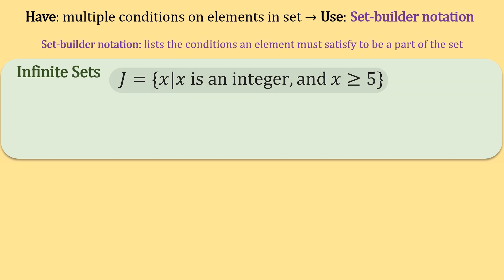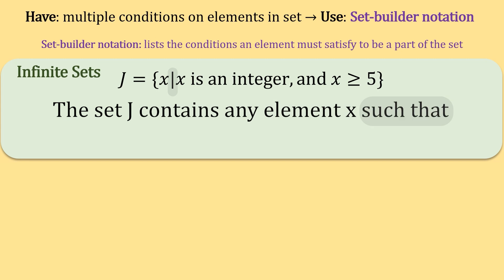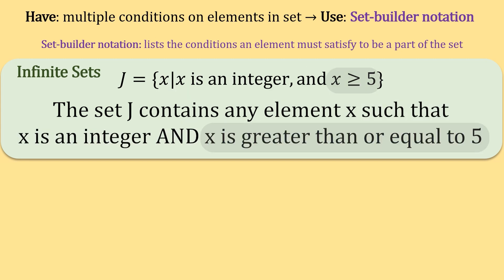Knowing this, I can now read this as the set J contains any element x such that x is an integer and x is greater than or equal to 5. Everything that follows this vertical line are the conditions that define the elements in our set. Our elements must be integers and also greater than or equal to 5.